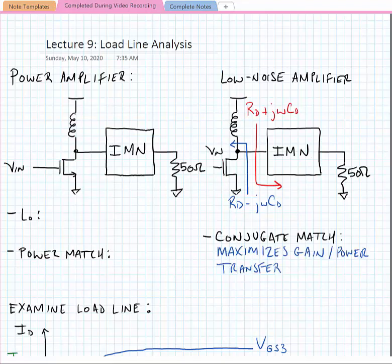What makes a power amplifier different is we have essentially the same thing—a transistor that might be biased through an inductor and an impedance matching network—but our impedance matching network is not going to provide the complex conjugate of the drain impedance. Instead, it's going to provide a load impedance that is equal to the optimum impedance of the transistor.